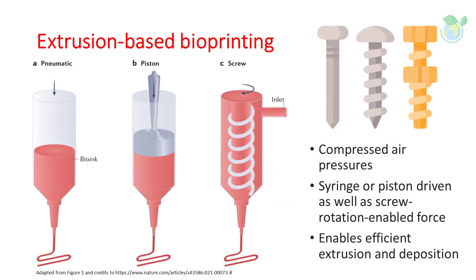Pneumatically driven extrusion bioprinting operated under compressed air pressures permits extrusion of the bioink. Cell-laden hydrogel can be dispensed by using pneumatic pressure or a syringe pump, and the amount dispensed can be adjusted by controlling the pressure level or the displacement of the piston of the pump. Screw rotation-enabled force is another mechanical means to allow introduction of the bioink into the nozzle for extrusion and deposition.